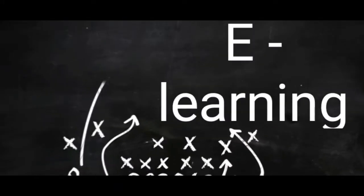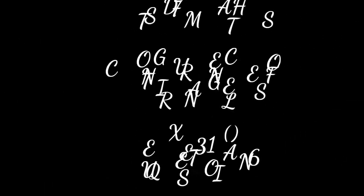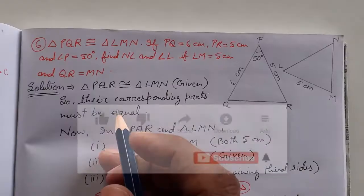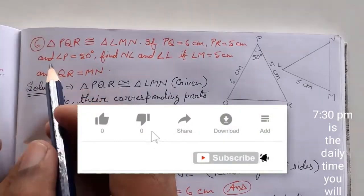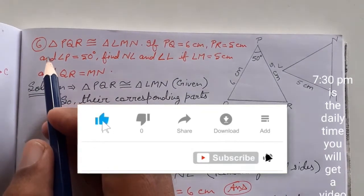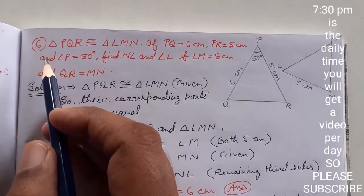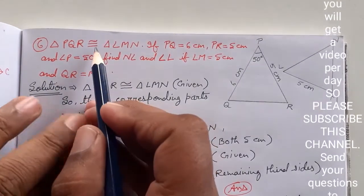Hi everyone, this is Asish and you are watching e-classes by Sitch Delal Academy. Today we are here to understand the solution of question number six of exercise 13a. Triangle PQR is congruent to triangle LMN.